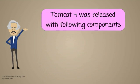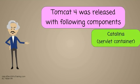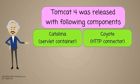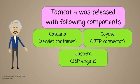Tomcat 4 was released with the following components: Catalina, which is a servlet container; Coyote, which is an HTTP connector; and Jasper, which is a JSP engine.